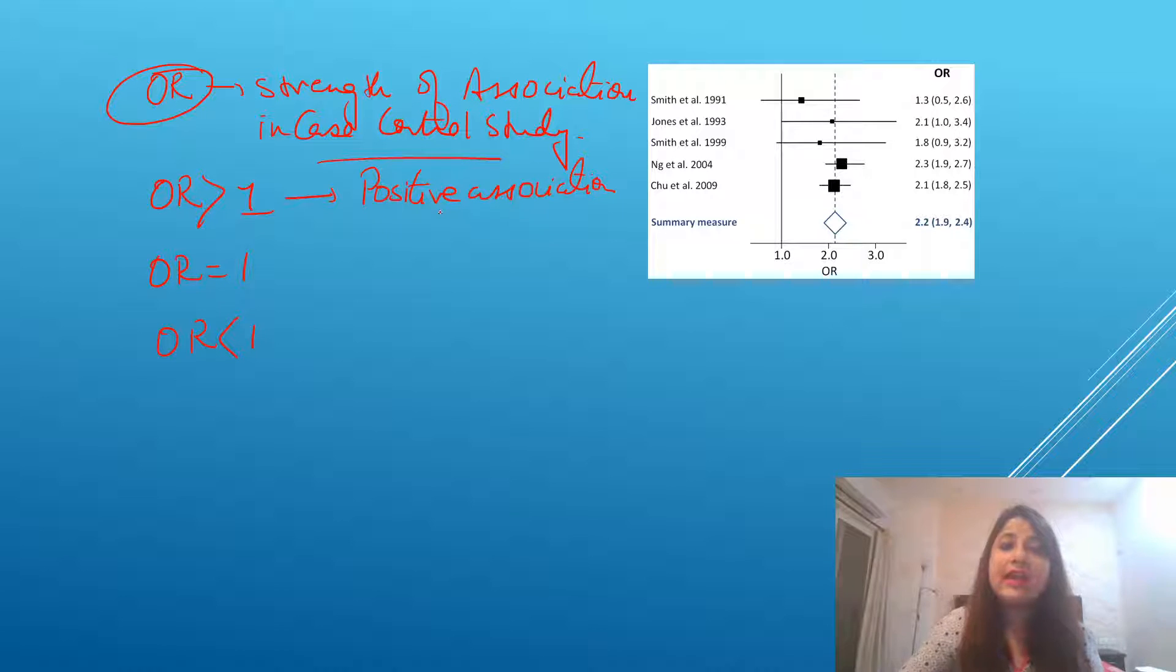Now, when it is more than one, we say that the factor has a positive association. Like smoking and lung cancer. If it is more than one, smoking has a significant, has a positive association. If you smoke more, lung cancer will increase. Odds ratio is equal to one means no association. And odds ratio less than one means negative association or we also call it as a protective factor.